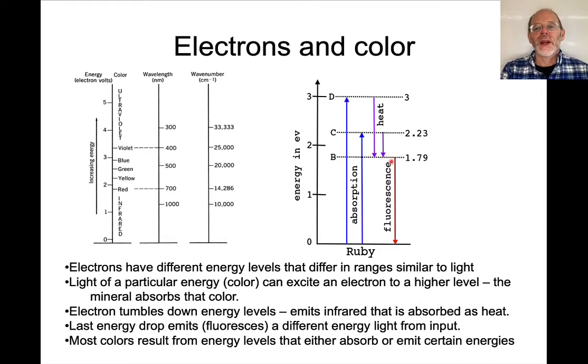whereas if it drops from one energy state to another energy state, that light will be emitted or fluoresced. So here's an example with ruby. And what we can see is that light will be absorbed if it has an energy level of 3 electron volts or 2.23 electron volts.